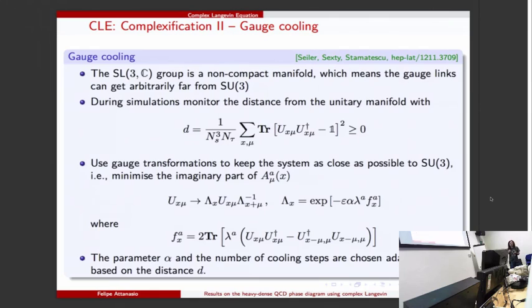This force here appearing inside the transformation matrix is given by this - it's basically a derivative of this distance D. Here we have this parameter alpha which is chosen adaptively depending on how large the force is, and also the number of cooling steps is changed adaptively to have good efficiency in the code.